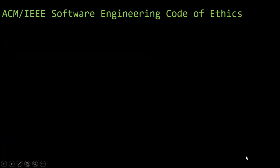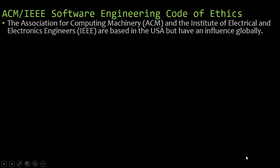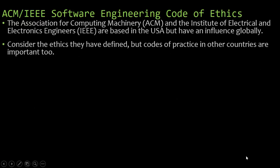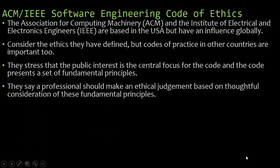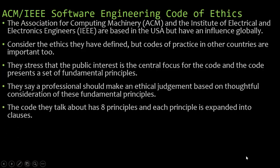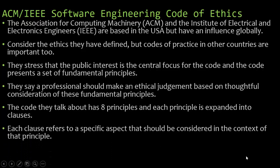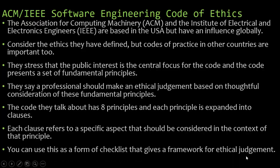That also ties into the ACM and the IEEE Software Engineering Code of Ethics. The Association for Computing Machinery and the Institute of Electrical and Electronics Engineers are based in the USA but have global influence. They stress that the public interest is the central focus for the code, which presents a set of fundamental principles. A professional should make an ethical judgment based on thoughtful consideration of these fundamental principles. The code has eight principles, each expanded into clauses, which serve as a checklist for ethical judgment.